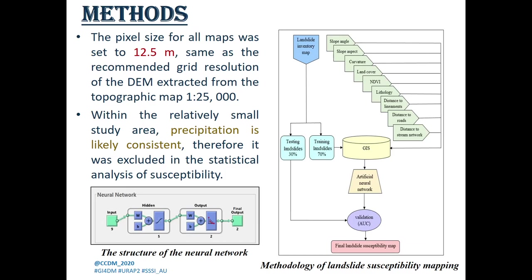The methodology used: the pixel size for all prepared causative factors and landslide inventory maps was set to 12.5 meters, same as the recommended grid resolution of the DEM extracted from the topographic map, while precipitation was excluded in the statistical analysis of susceptibility because it is likely consistent within the relatively small study area.